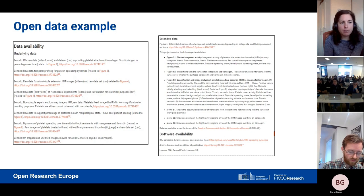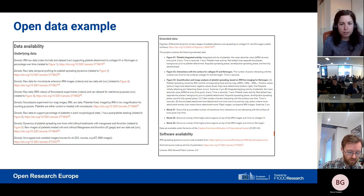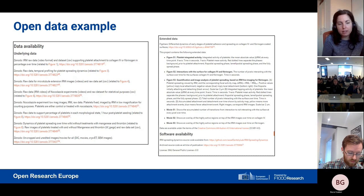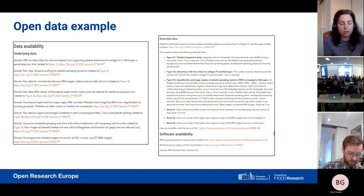Extended data is the equivalent of supplementary material in other journals. We don't support supplementary material in PDF format because PDFs are rendered useless without a DOI — you can't cite them. If you deposit data in a repository, it receives a DOI, linking the data to the article. We have a list of approved repositories on our website. We look for data to receive a persistent identifier and to be held indefinitely. If an author proposes a repository requiring an annual fee, we ask them to choose a different one to guarantee the data remains accessible permanently.